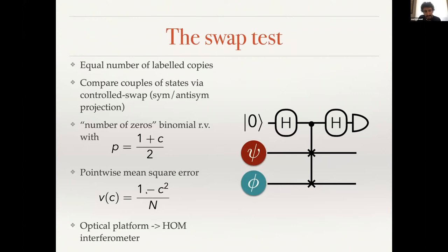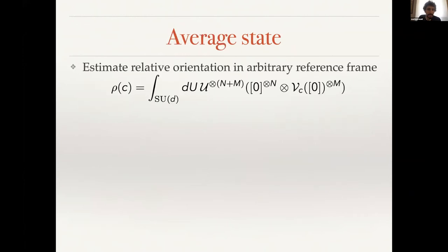The problem is that this test is very bad at estimating states that are close to orthogonal. When c is zero, the mean square error goes to a constant, whereas you would like it to be zero or very close to zero. By the way, a well-known optical implementation of the swap test is just the Hong-Ou-Mandel interferometer.